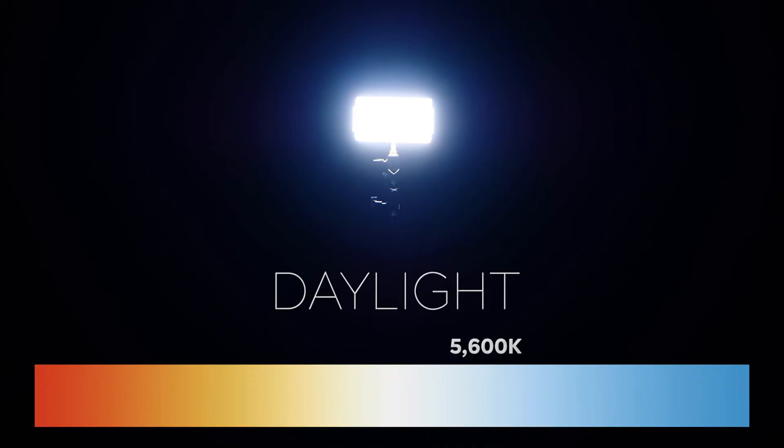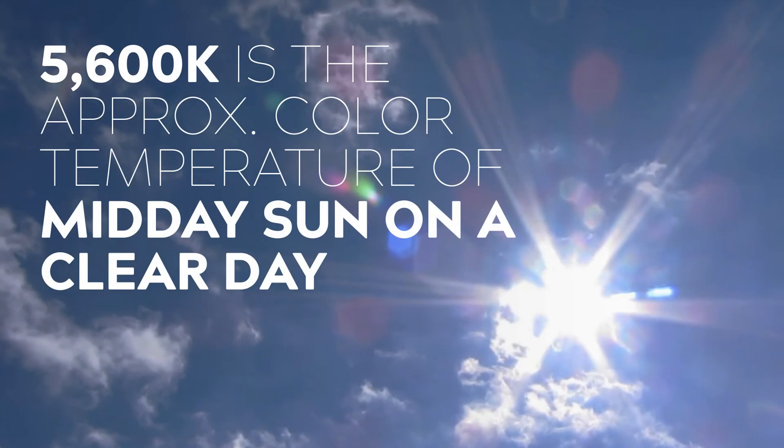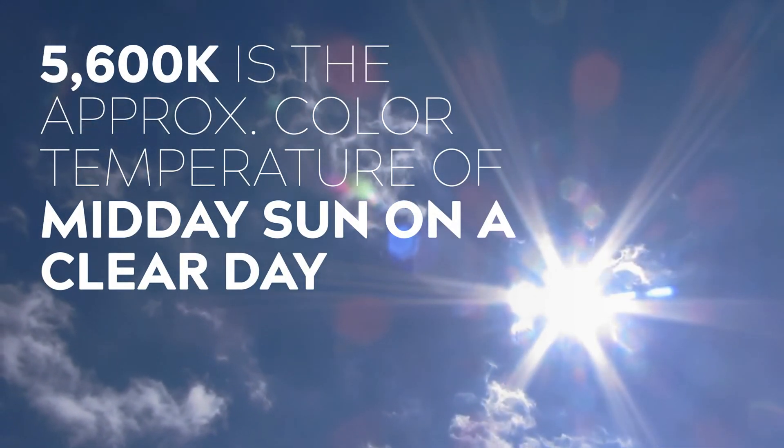Next is 5600 degrees Kelvin and this is our second primary colour temperature. 5600 degrees Kelvin, or daylight as it's commonly known, is the approximate colour temperature of midday sun on a clear day. This is by far the most common colour temperature and many lighting fixtures such as LEDs, HMIs and fluoros are designed at this colour temperature so they can be as versatile as possible because they match natural daylight.